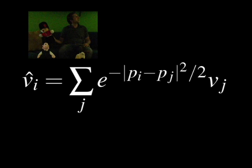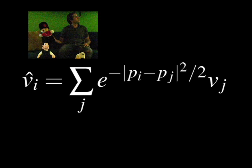If we return to our equation and instead set the position vectors to be windows around their respective pixels, then we mix pixels with other pixels that have similar local neighbourhoods. This is non-local means, which our Gaussian KD tree accelerates.